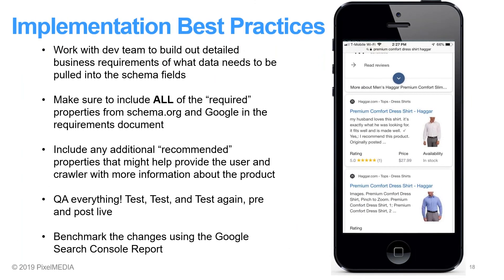Implementation best practices continued. We recommend working with a dev to help build out the requirements that you need going forward to implement e-commerce schema. It's important that you cover all the required properties from Google and schema.org within these requirements. We also recommend including any recommended properties that might be applicable to your products — some of this might be product description, URL, etc. Where applicable, add these. You want to give Google the most information about your products so they can best serve user queries.